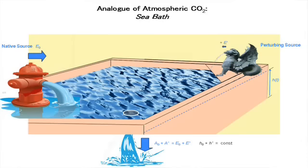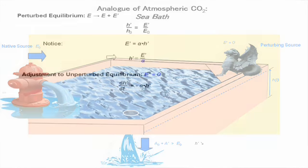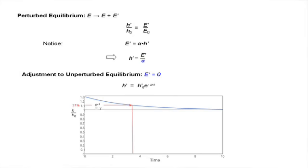Suppose the perturbation of emission is eliminated — the perturbing source is switched off. Absorption is then unbalanced and exceeds emission, so height must decrease. It does so until height returns to the unperturbed equilibrium, whereupon absorption again equals emission. The perturbation of height decays exponentially at rate alpha, restoring height to the unperturbed equilibrium. After one absorption time, the perturbation has decreased to 37% of its initial value. Notice that the response to perturbation reveals what cannot be measured directly — the absorption time, how fast water is removed from the bath.